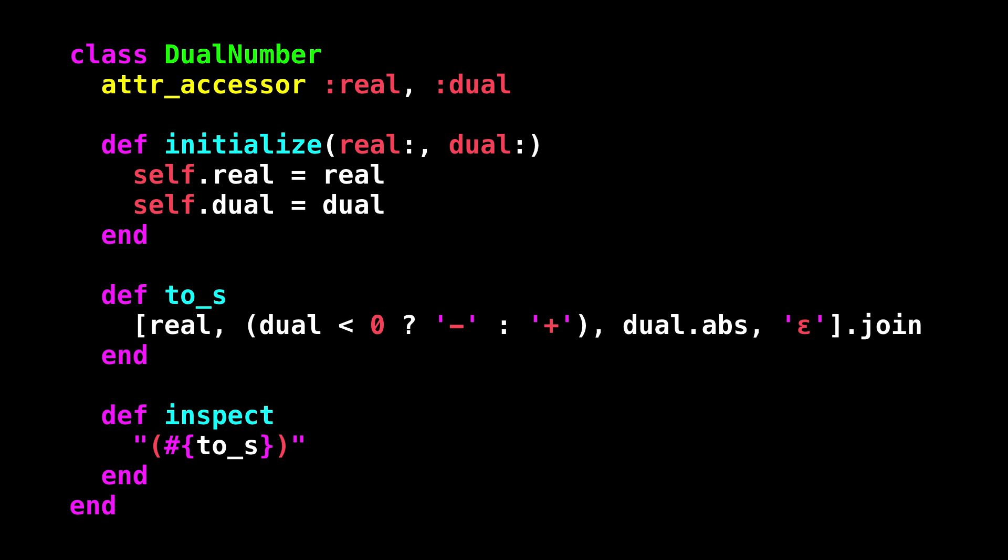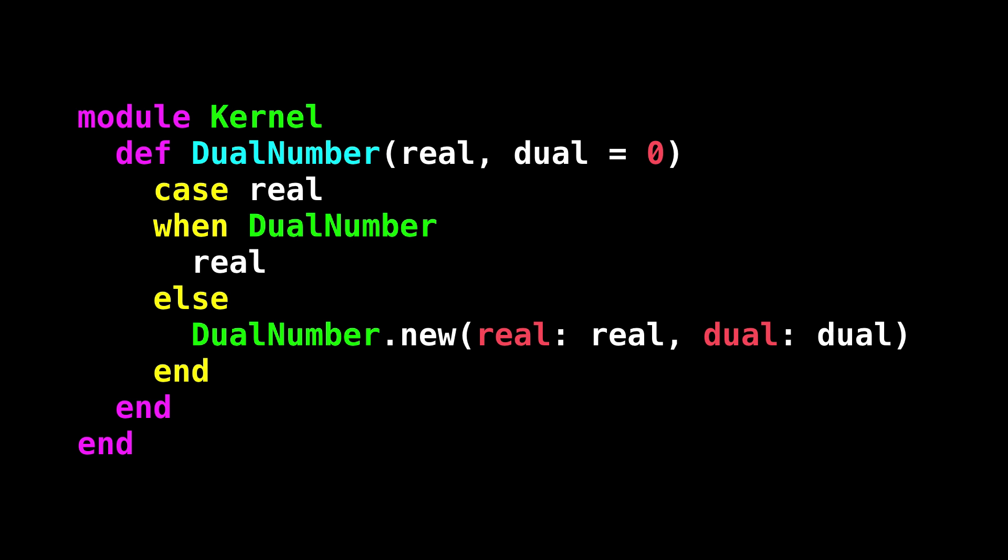So let's just make a boring class for dual numbers, with accessors for the real and dual parts, and a string representation. And add a convenience method to kernel for converting normal numbers into dual numbers like the complex and rational classes have. If we don't specify a rate of change, then it defaults to zero. That gives us a dual number that represents a constant not changing at all.